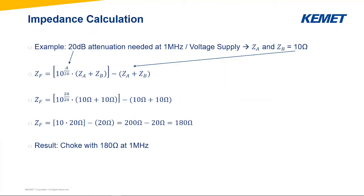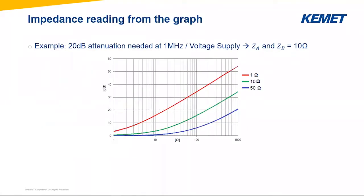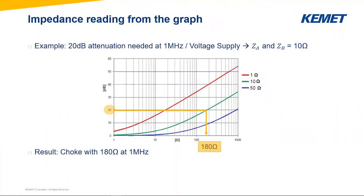For those who don't like to calculate, there's a simpler graphical method. I can draw all the relationships in one graph. With the same example — 20 dB attenuation and the green curve reflecting 10 ohms — I read out 180 ohms. Choosing a component with 190 or 170 ohms won't make a big difference. This graph is valid for all products from all suppliers — it's not specific to any one series or one supplier — it's a general representation of the calculation we just saw.